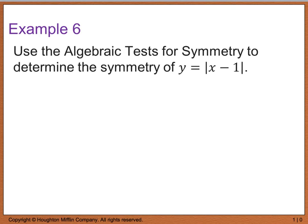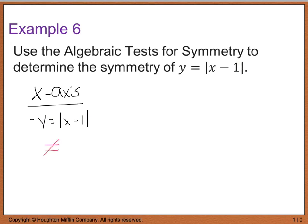Example 6 says to use the algebraic tests for symmetry to determine the symmetry of y equals the absolute value of x minus 1. Starting with x-axis symmetry, we replace y with negative y: negative y equals the absolute value of x minus 1. This is not equal to the original equation, so there is no symmetry with respect to the x-axis.